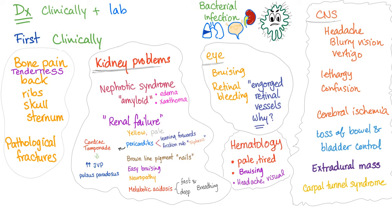Hypercalcemia occurs because of bone destruction. Cerebral ischemia, and loss of bowel and bladder control occur due to radiculopathy or spinal cord compression from an extradural mass — the vertebrae compress over each other causing fractures and radiculopathy. Carpal tunnel syndrome occurs because amyloidosis deposits into soft tissue.